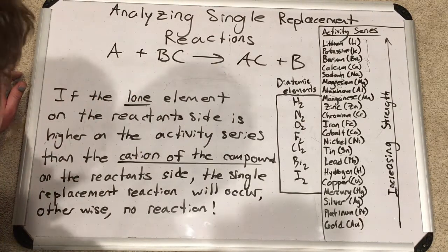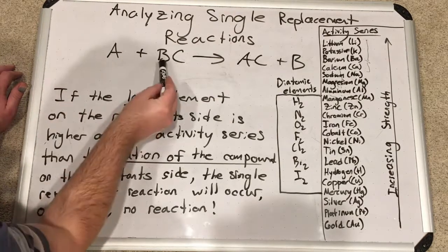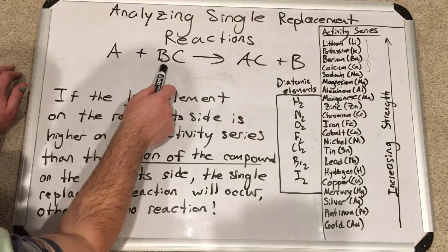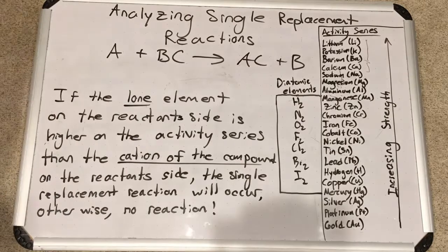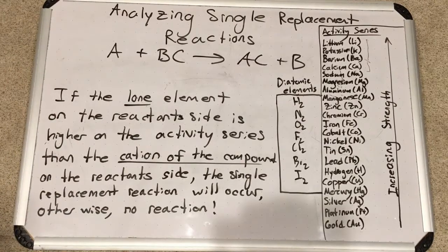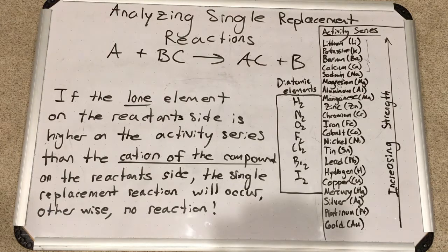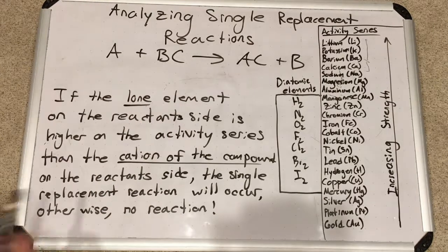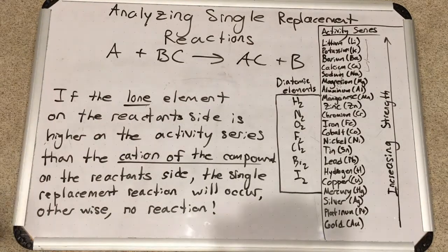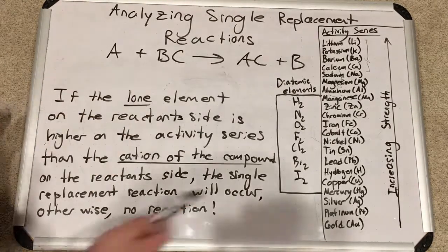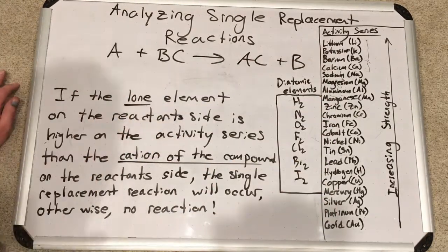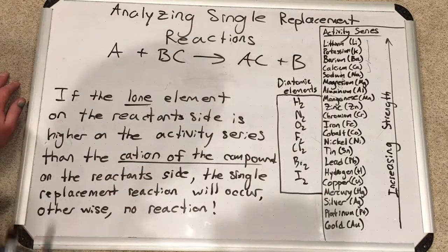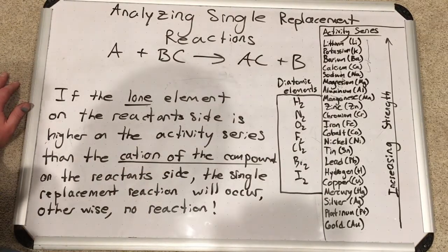The silly analogy to this is a jealous guy sees another guy with his girlfriend and he fights the guy and then he takes her and sends him packing. Now what I want to make clear is that particularly with this A versus this B, whatever these elements are, A will be able to knock off B if it's higher on the what's called activity series than B. So this activity series shows you the order in which elements are lined up that are more active than others when it comes to single replacement.